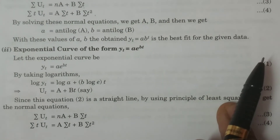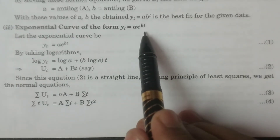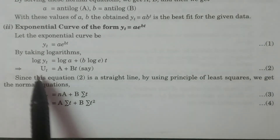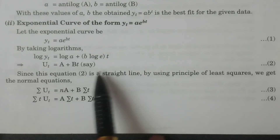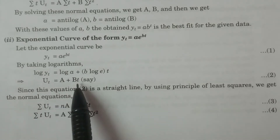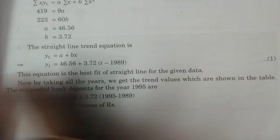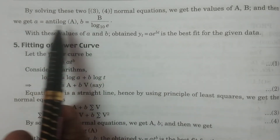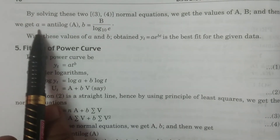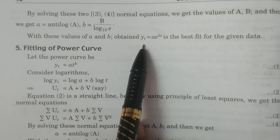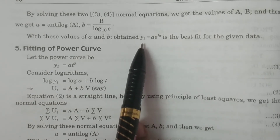Similarly, another form of the exponential curve is yt = a·e^(bt). For this we also consider logarithms, convert to a straight line, and obtain normal equations. By solving these normal equations we get the values of capital A and capital B, and then calculate the parameters small a and small b, where A = antilog(a) and b = B / log(e base 10). With these values we obtain the best fitted exponential curve yt = a·e^(bt).